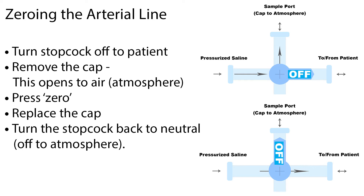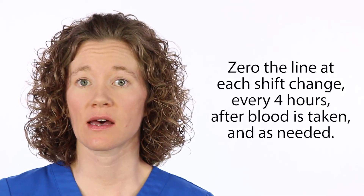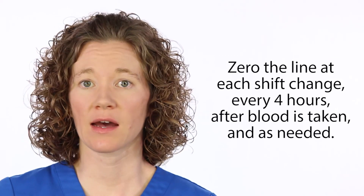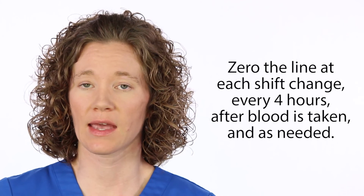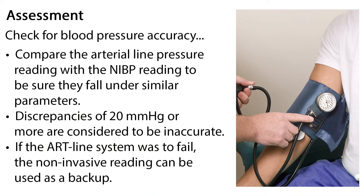Remember, whenever the patient position is altered, the transducer height should be altered to keep it at the level of the right atrium. Zeroing the line should be done at each shift change, every four hours, and after each time blood is taken from the art line system, as well as as needed.